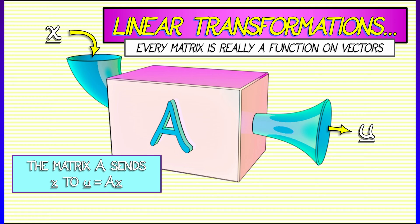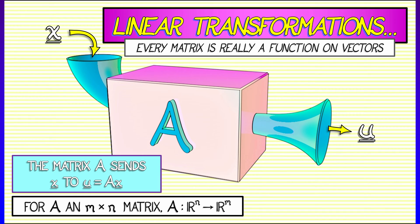I'm going to think of multiplication by A as a function. Now what this means in practice is that if A is an m by n matrix, then the input x is really a vector in R^n, and the output u is really a vector in R^m.